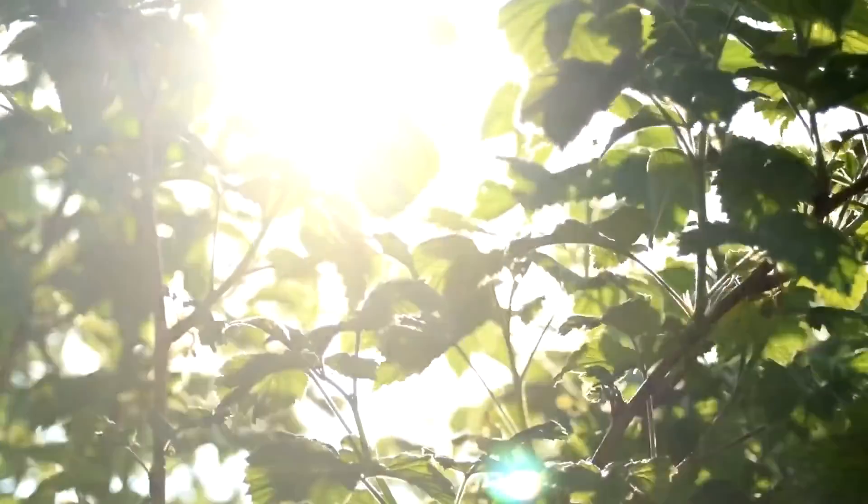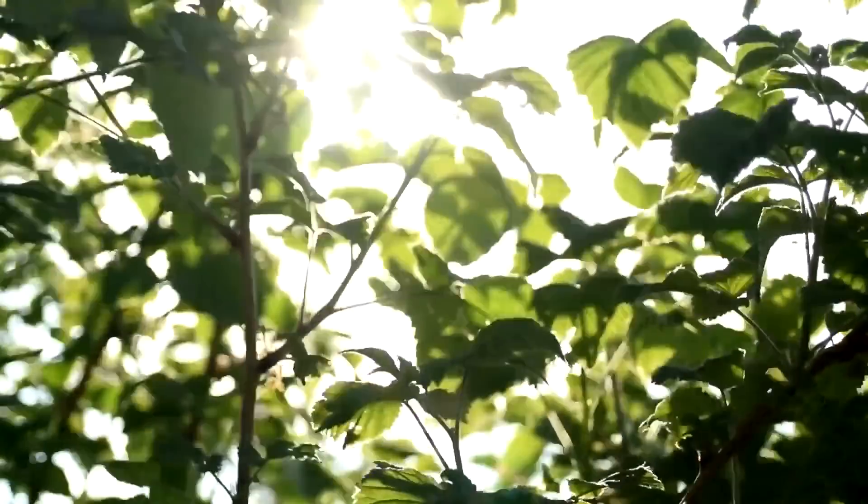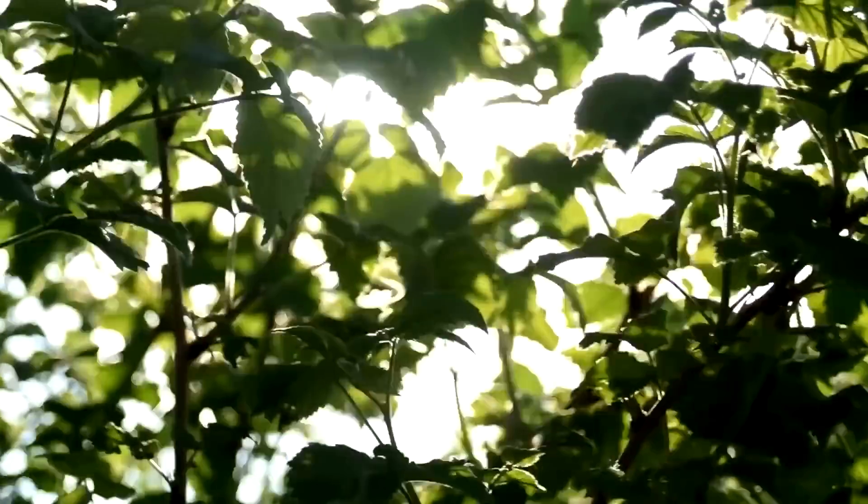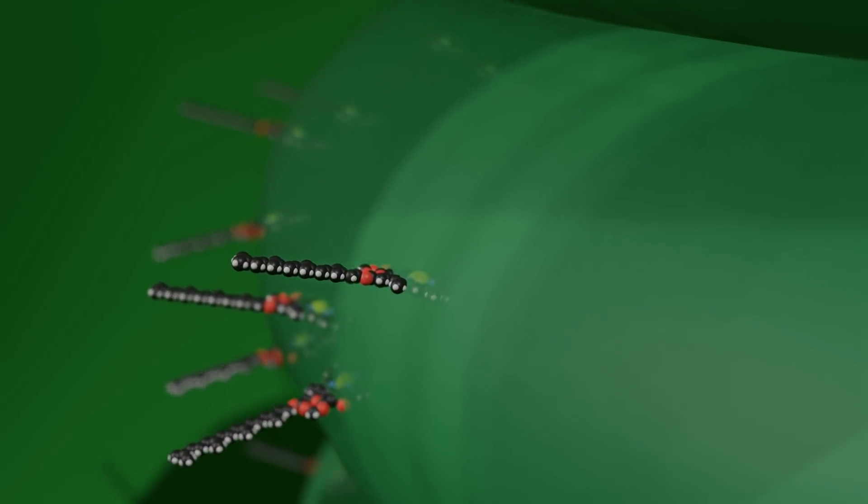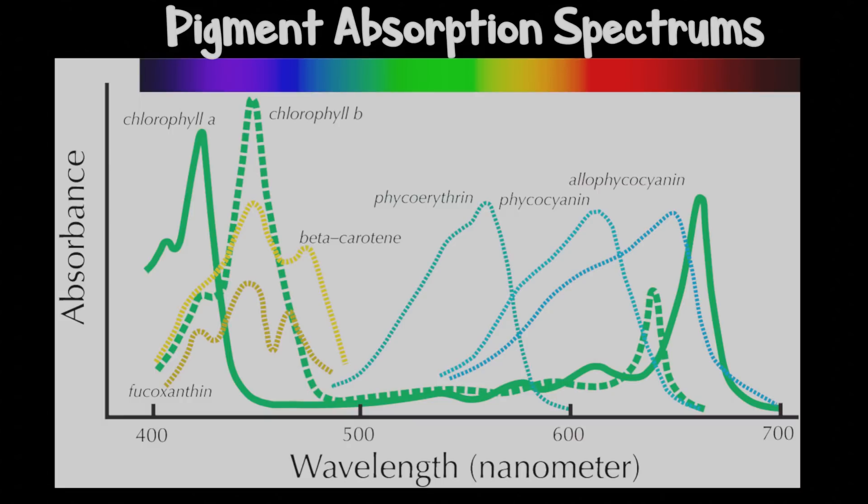The first question we can ask is how do plants capture sunlight? This is accomplished by synthesizing molecules called pigments within the chloroplasts of plant cells. Although all matter interacts with light, pigments are molecules who interact strongly with visible light. So our next question is why and how are pigments so good at absorbing light?